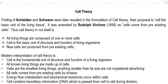Dear students, in today's lecture we are going to see about cell theory. The cell theory was formulated by the findings of Schleiden and Schwann. Their main proposal is related to the cell functioning as a basic unit of any kind of living tissue. The cell theory was further amended by the points of Rudolf Virchow.